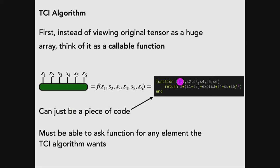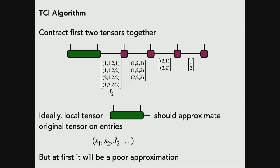It can't be a function that always returns zero and then returns one when you've guessed the right password — that's not learnable because there's no structure to give a hint to the algorithm of where to look next. But as long as it's structured, this could work. It takes these indices, runs the code, computes something, and returns a number. You must be able to ask this function for any element the algorithm wants — it's more demanding than just giving it a pile of data, because here you have to be able to ask for any point in the space.